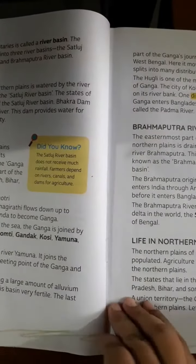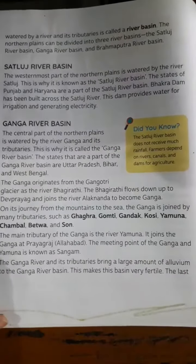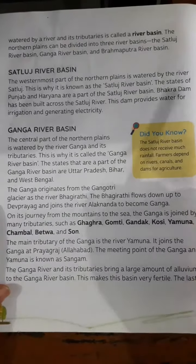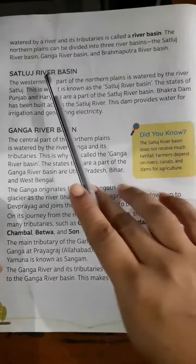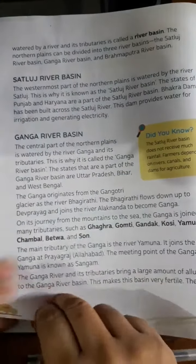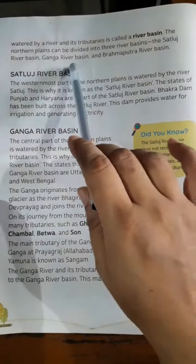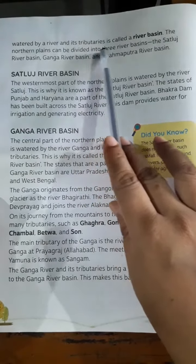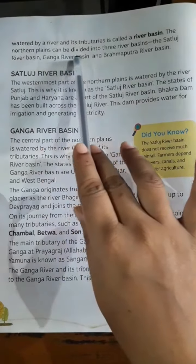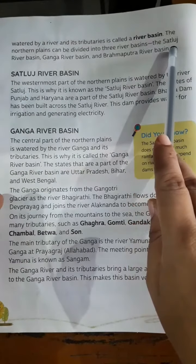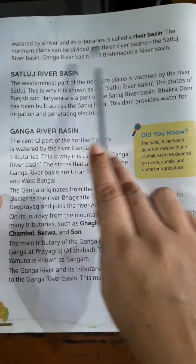The area watered by a river and its tributaries is called a river basin. The Northern Plains can be divided into three river basins: the Satluj river basin, the Ganga river basin, and the Brahmaputra river basin.